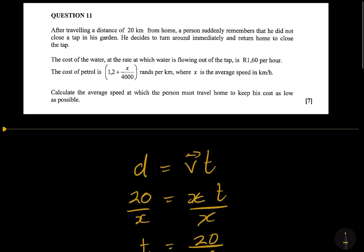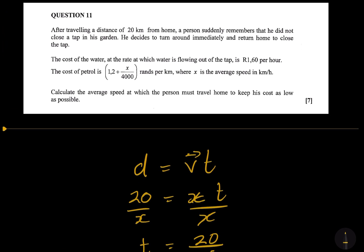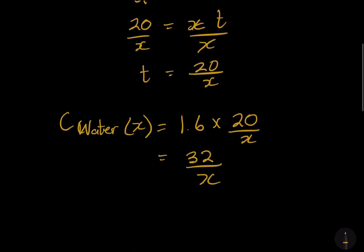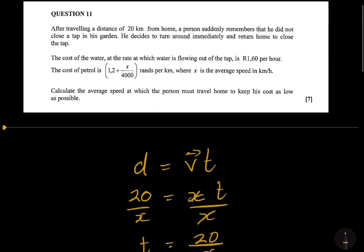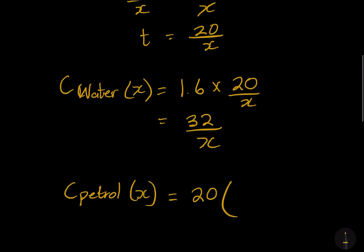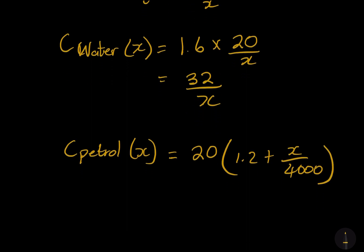Secondly, we've got the cost of petrol. Note the cost of petrol is dependent on distance - that's rands per kilometer. So it's dependent on the distance. If we are going to get the cost of petrol or the amount of petrol that they would actually burn, it would be dependent on the number of kilometers. But we already know they traveled 20 kilometers. We know that the rate at which they bill is 1.2 plus x over 4000. So you've got two costs here: cost of water, cost of petrol.